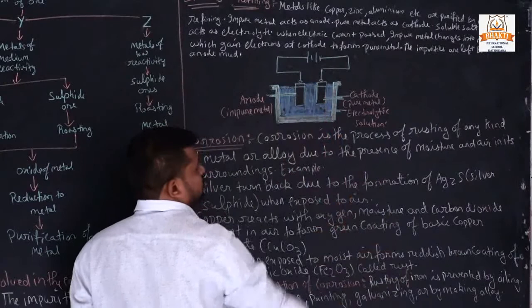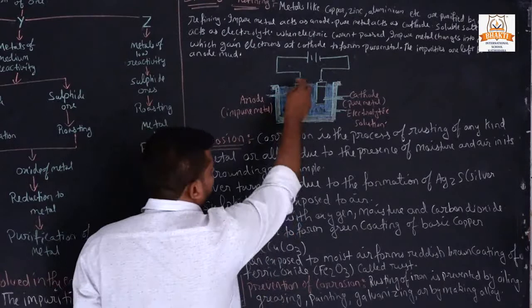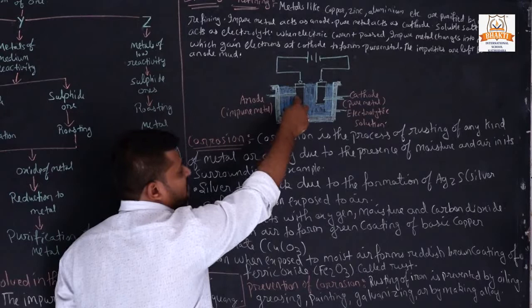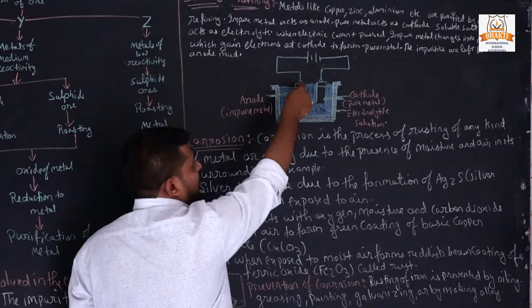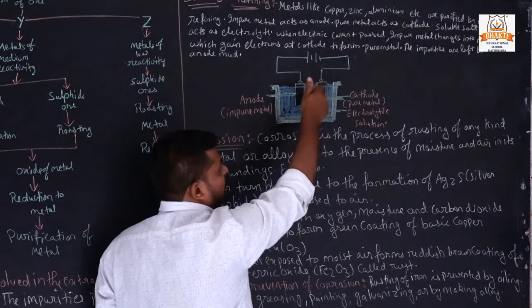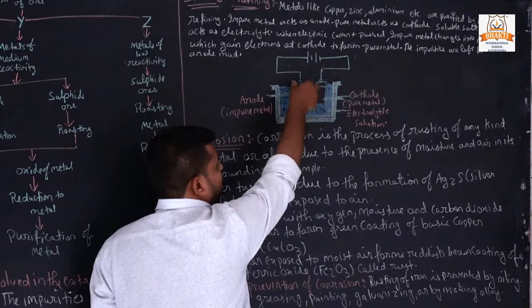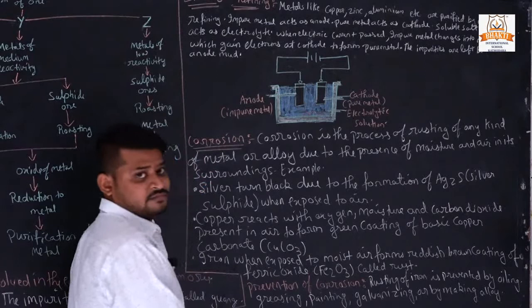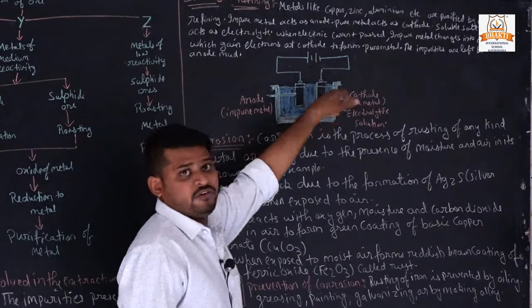When electric current passes through the anode — which is the impure metal — the impure metal loses electrons and the pure metal ions travel and get collected at the cathode. The impurities are left behind as anode mud. At the cathode we get a pure metal. This process is called electrolytic refining. These are the three processes by which we extract metals from their ore.